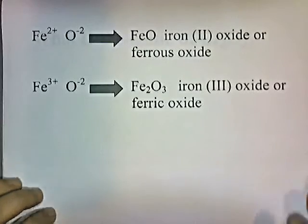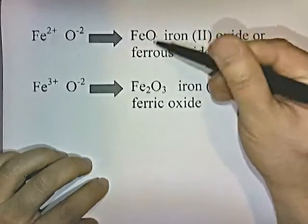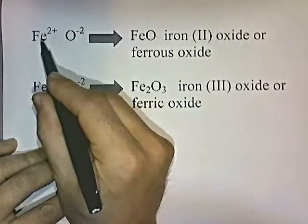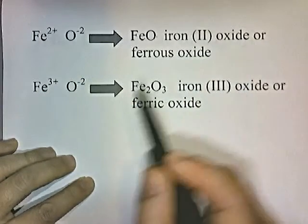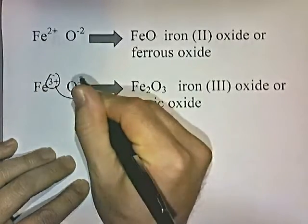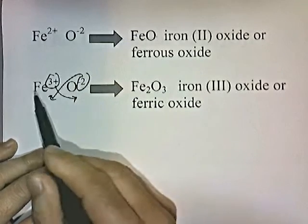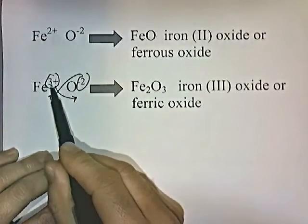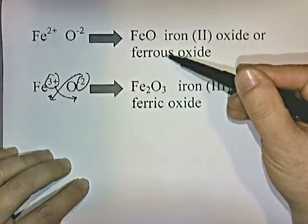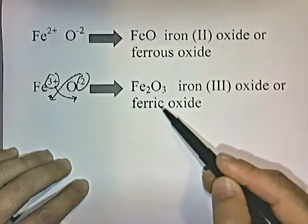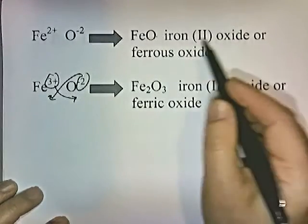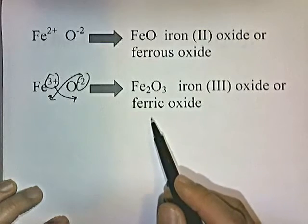How would we distinguish two iron oxide compounds? They could both be called iron oxide. One has iron in the plus two charge, so it's iron 2 oxide (FeO). The other has iron in plus three; crisscrossing gives Fe2O3, called iron 3 oxide. Using the old Latin system, FeO is ferrous oxide and Fe2O3 is ferric oxide, since plus three is the higher oxidation state.